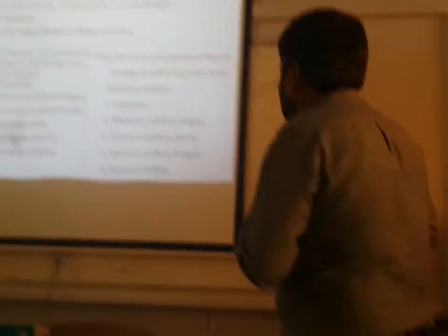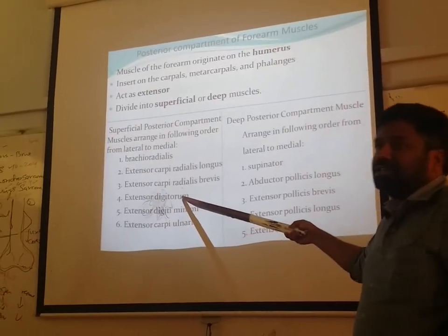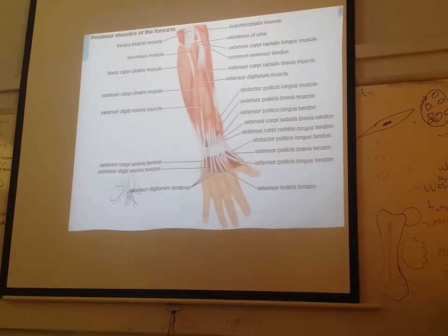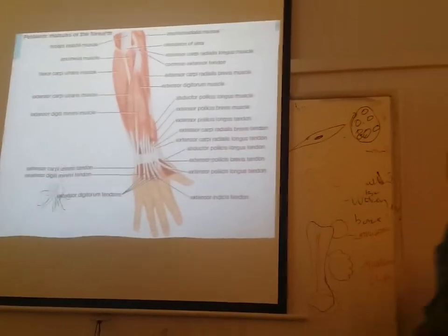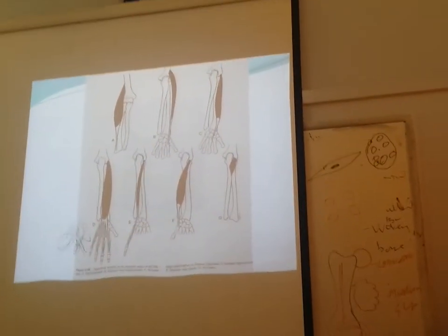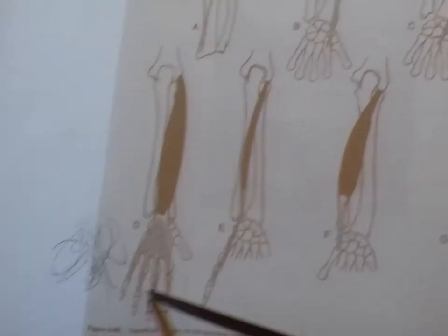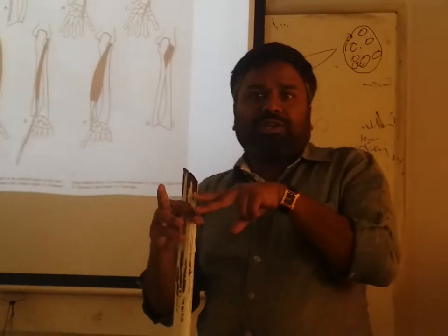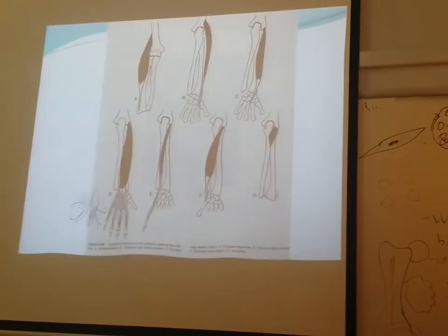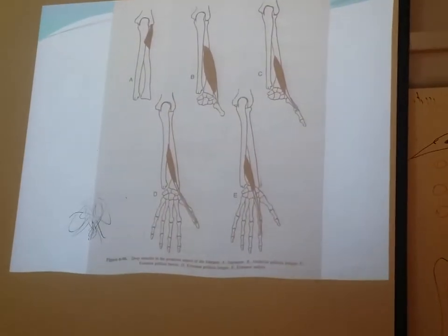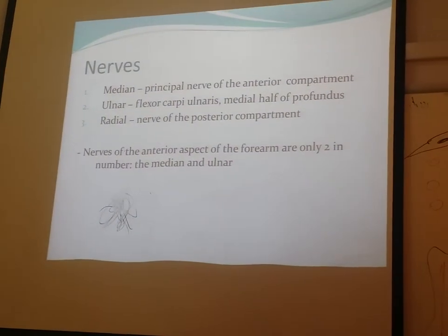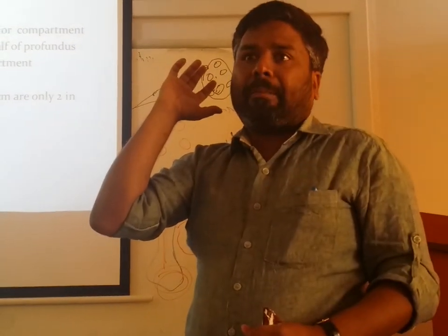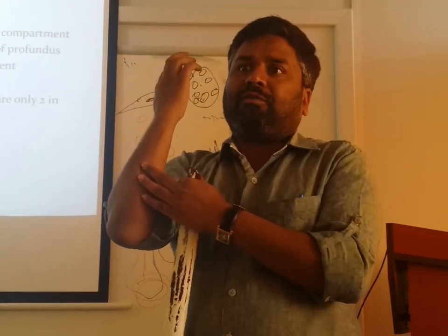These are six superficial and five deep muscles in the extensor compartment. Regarding extensor digitorum insertion: it goes to the middle phalanx, but unlike flexor digitorum superficialis it does not split, because there is no other tendon passing through it. The nerve of the posterior compartment is the radial nerve — all muscles of the posterior compartment of the forearm are supplied by the radial nerve. No confusion here. Only confusion is in the anterior compartment where median nerve has exceptions.